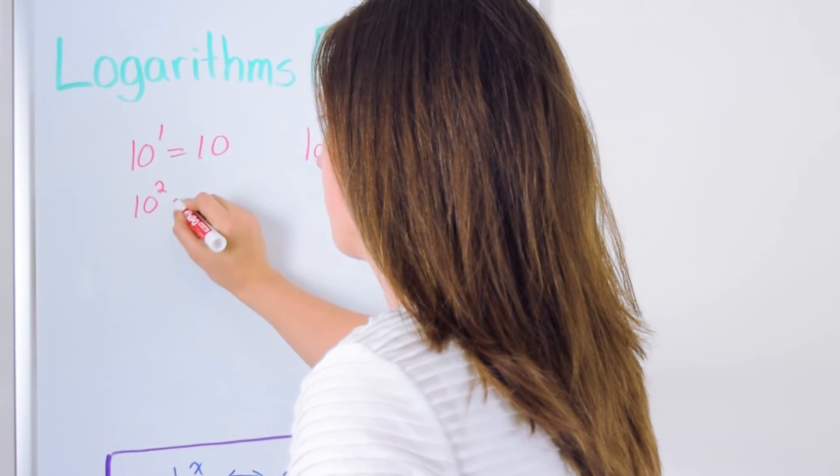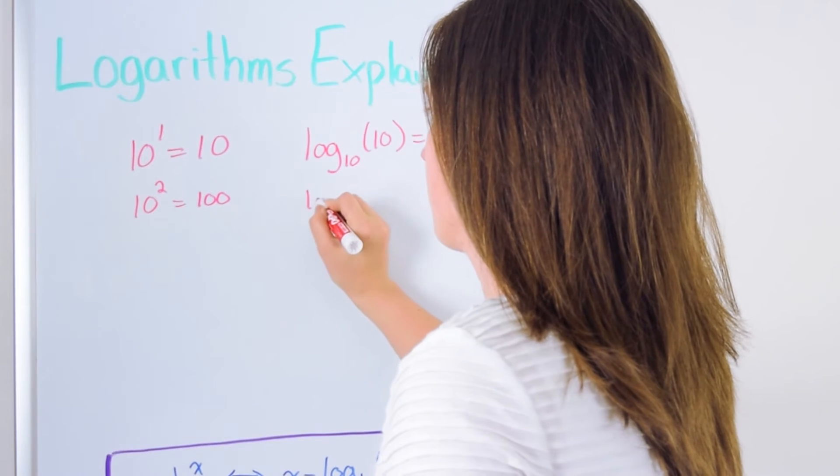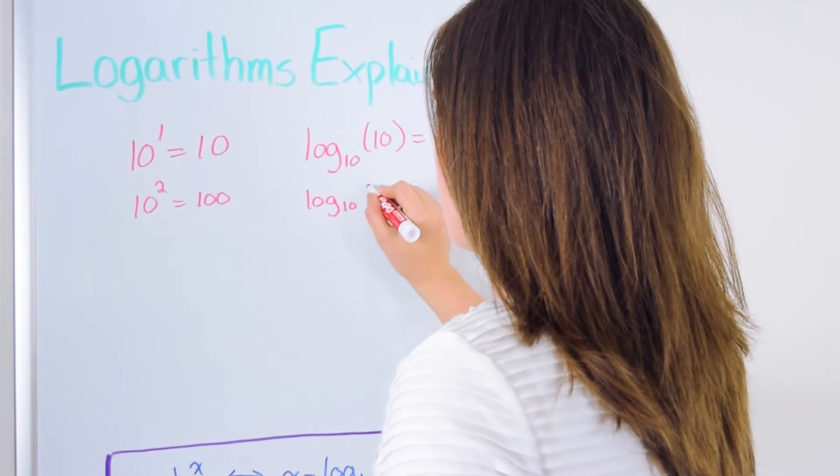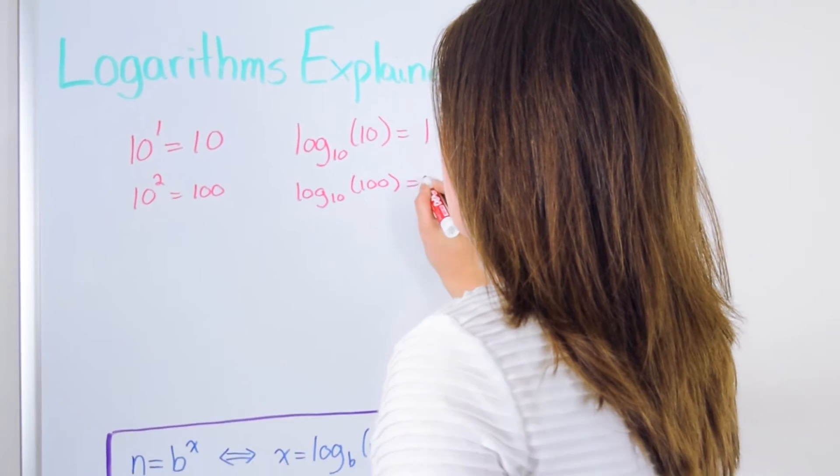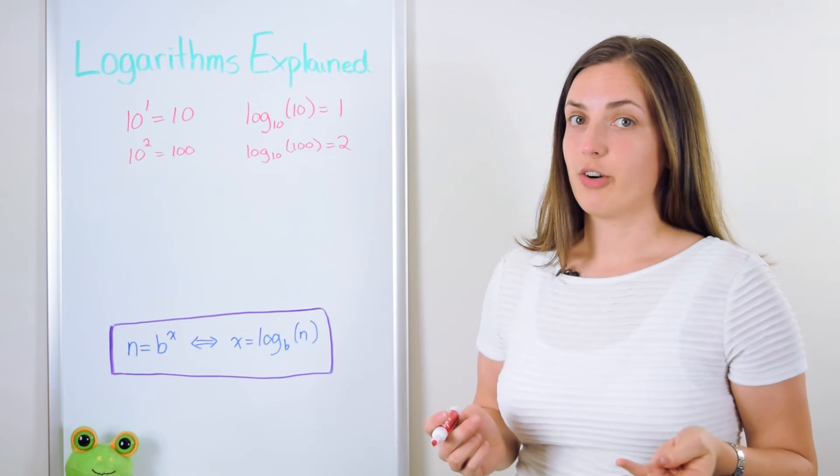We know that 10 to the power of 2 is equal to 100 so that's how we know that the log base 10 of 100 is equal to 2. Similarly we can write down something more general.